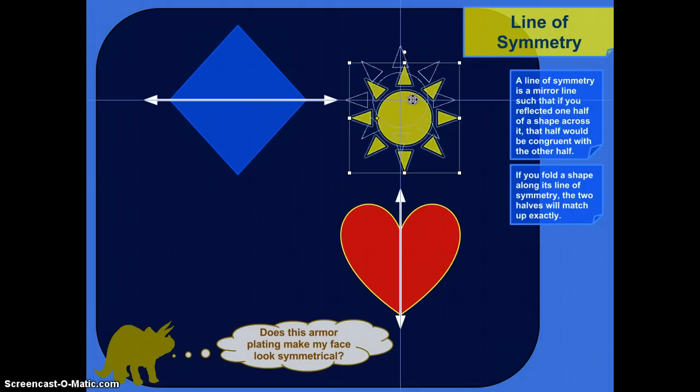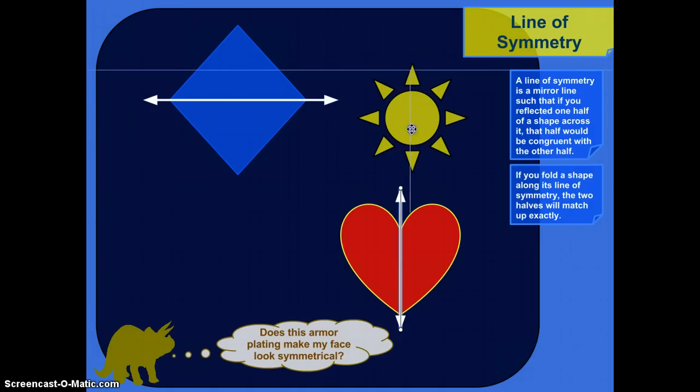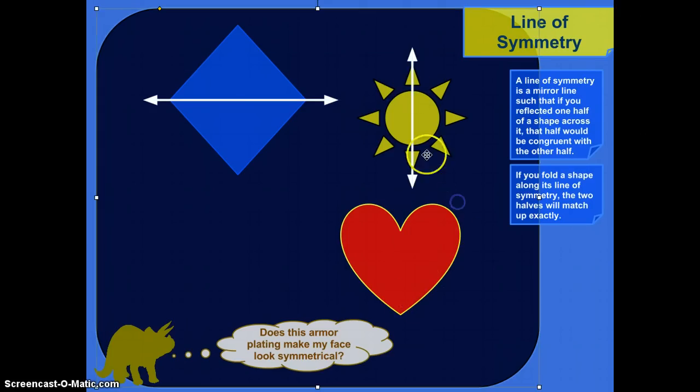Objects can have multiple lines of symmetry. For example, this sun here, there's a vertical line of symmetry. I'm just going to steal that one. Right there. So, if you fold the sun in half along that line, this part would match up with this part, this part would match up with this part, etc. You could also fold it this way.